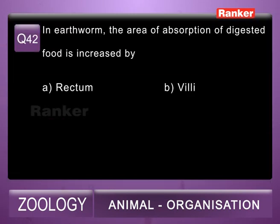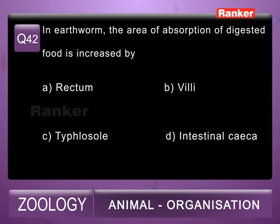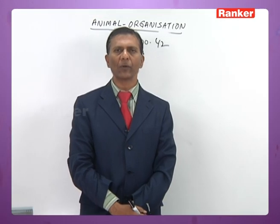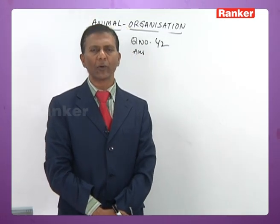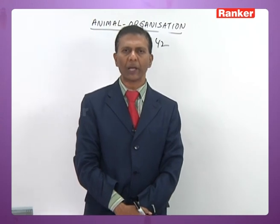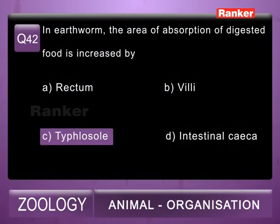Question 42: in earthworm, the area of absorption of digested food is increased by A) rectum, B) villi, C) typhlosole, D) intestinal caeca. The typhlosole, which lies in the typhlosolar region, enhances the rate of absorption of digested food. So the 42nd question correct answer is C.